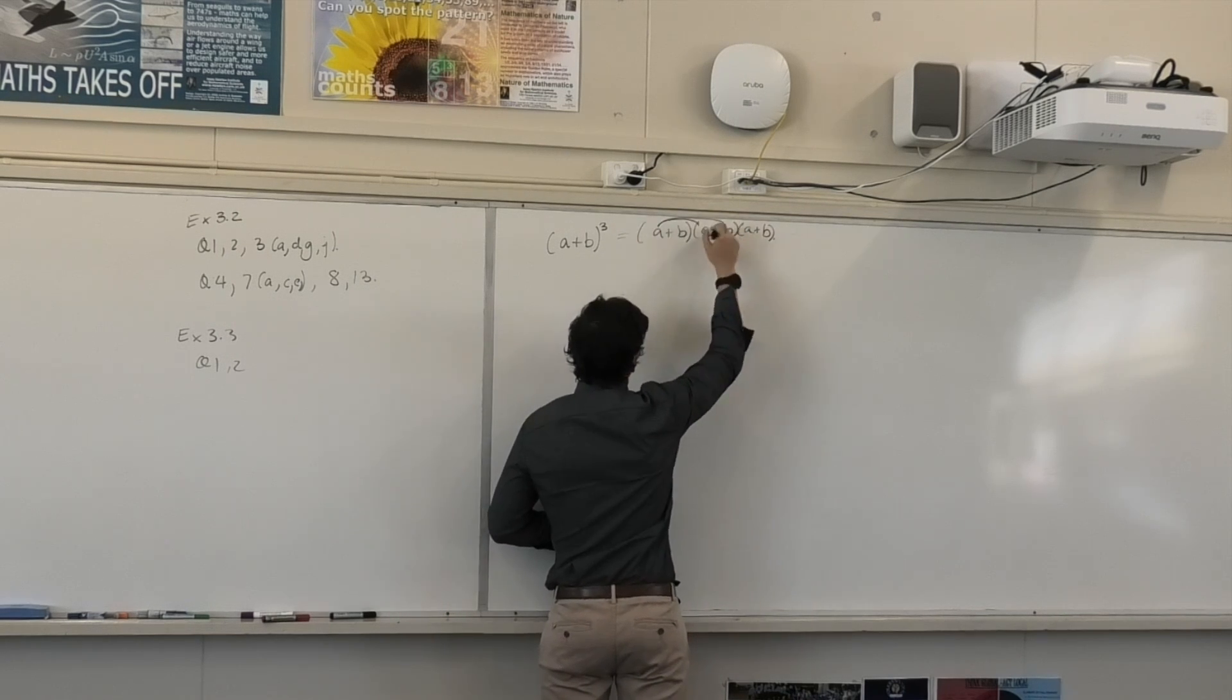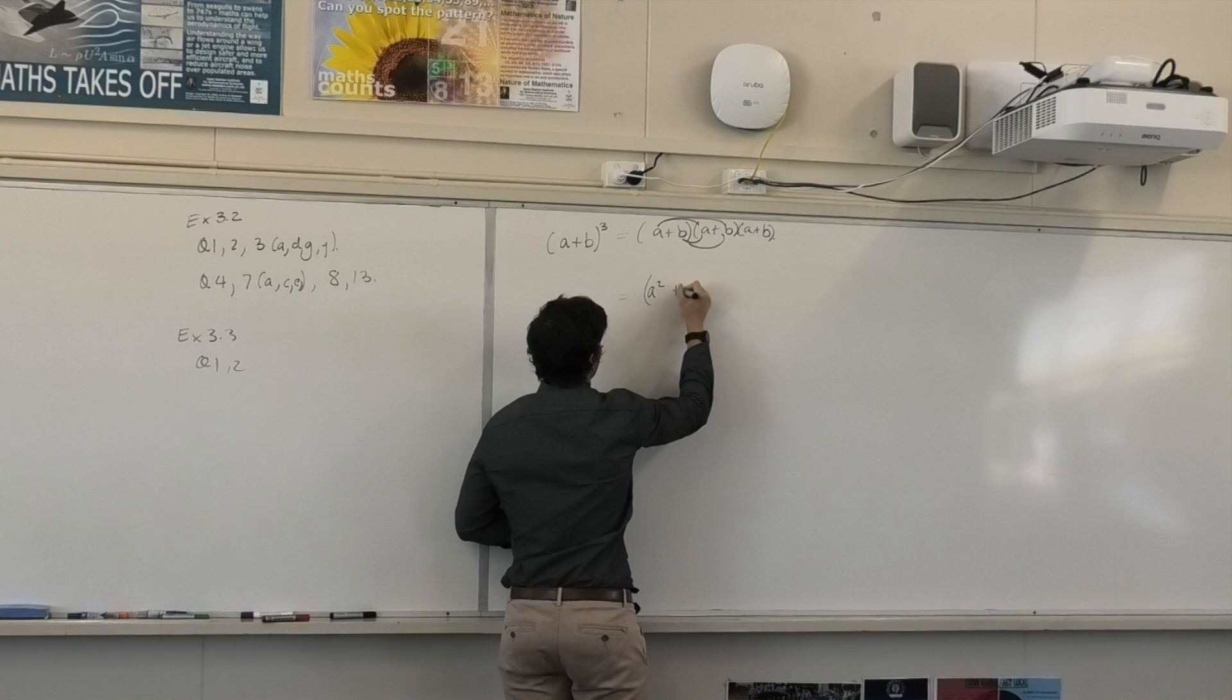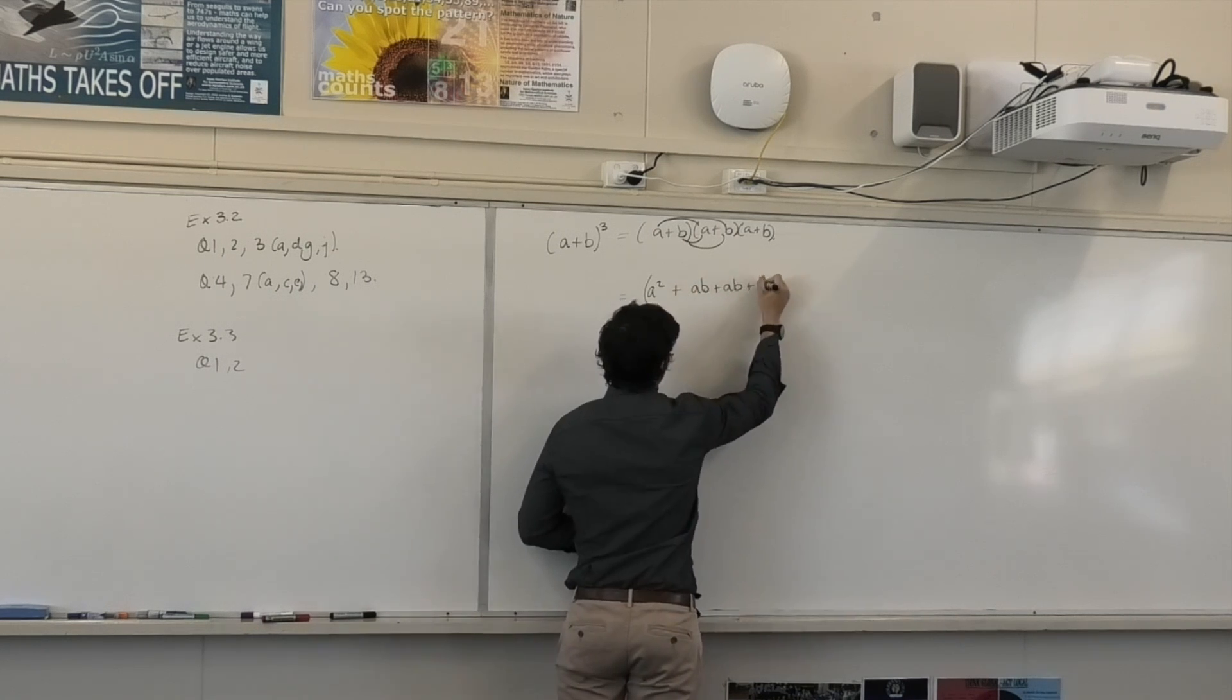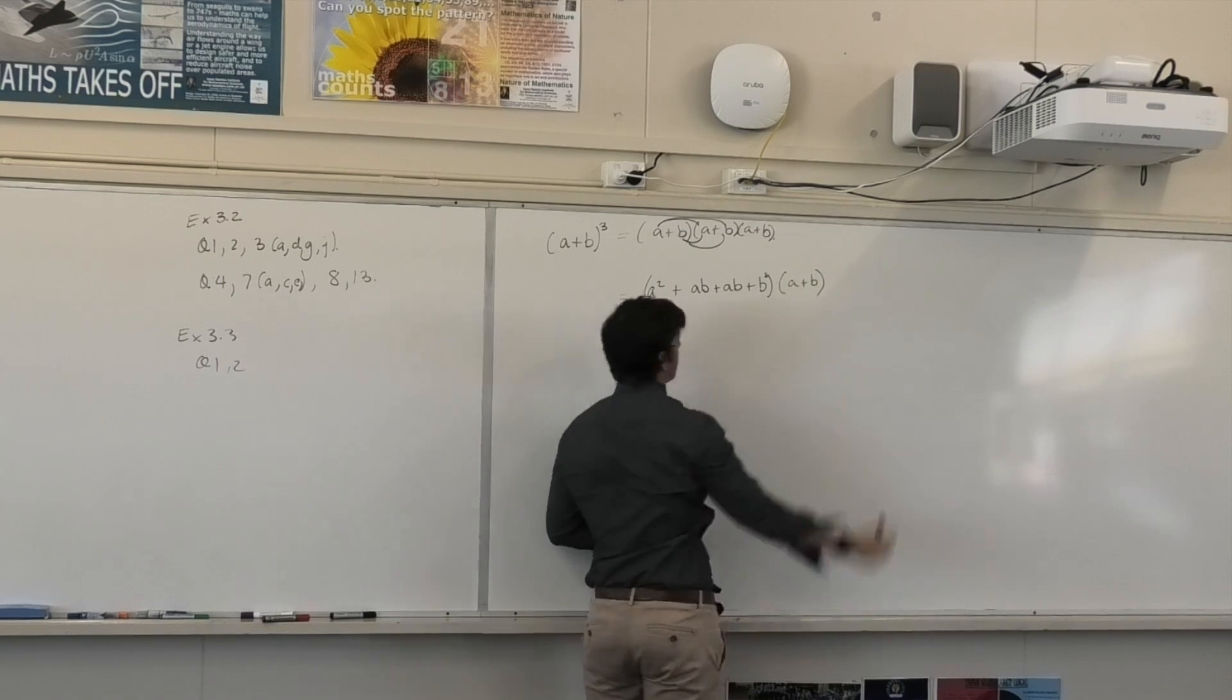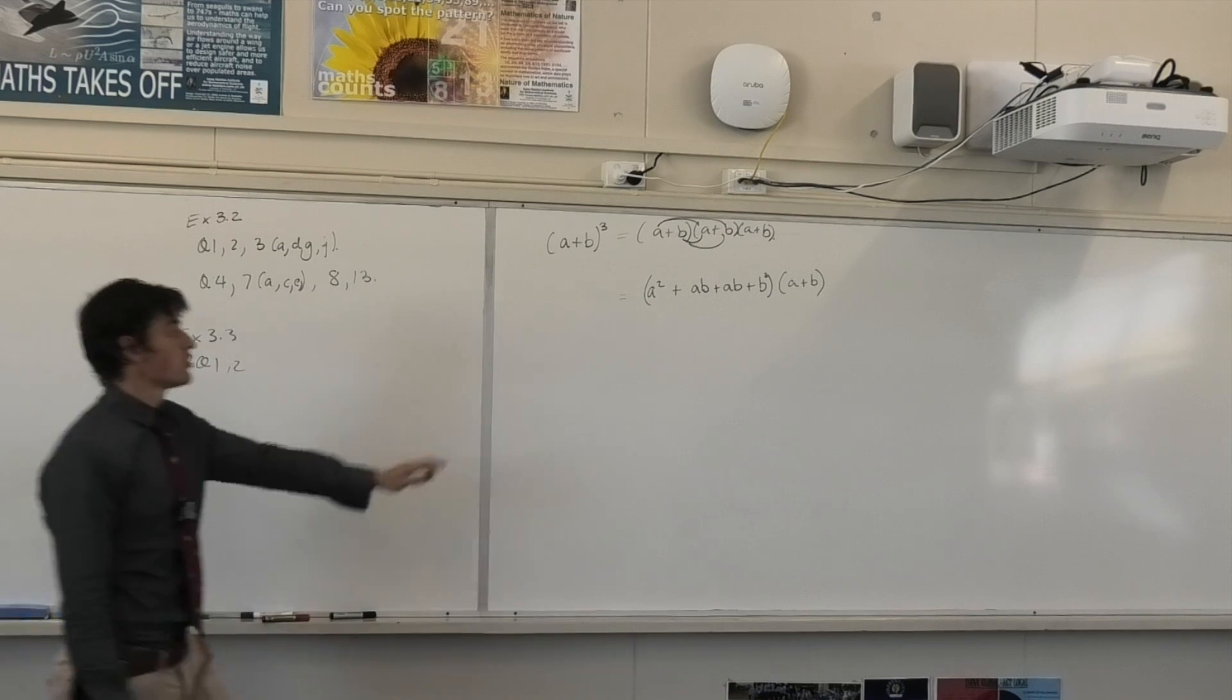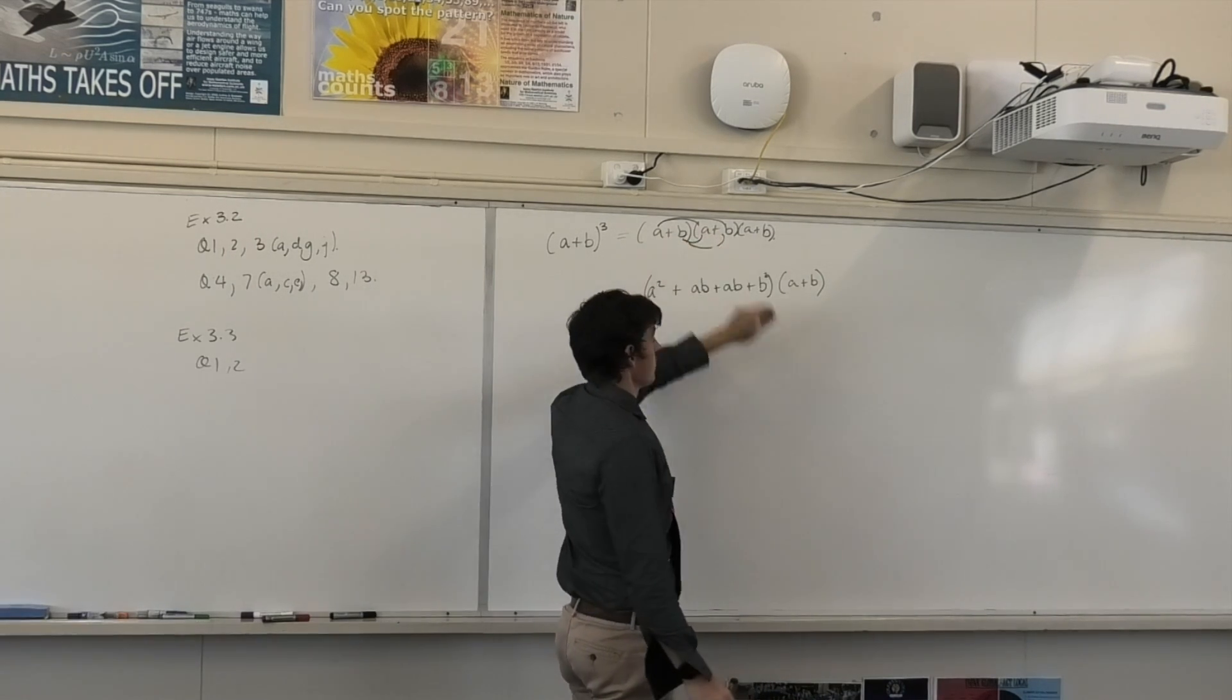So you get the idea. It's a rough-looking crab claw. But I get A squared plus AB plus AB plus B squared times A plus B. Are we happy with that? Yes. So A times A, A times B, A times B, B times B.